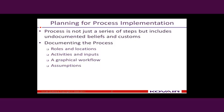When documenting the process, you have to capture the roles involved, since your process may cut across multiple different locations of your organization. Document what are the different activities, and for every activity what is the input and output. If you can draw it, that is great — you can draw it on a piece of paper, a whiteboard, or using Visio. Another very important thing is to list out all the assumptions, because there are often many assumptions made implicitly. The moment you make those assumptions explicit, you will see that you can implement those assumptions as part of the process itself.